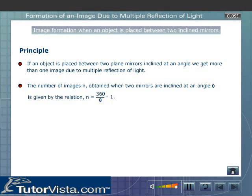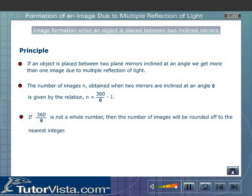The number of images, n, obtained when two mirrors are inclined at an angle theta, is given by the relation: n = 360 divided by theta, minus 1. If 360 divided by theta is not a whole number, then the number of images will be rounded off to the nearest integer.